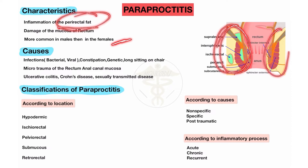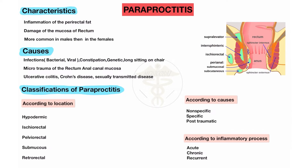Inflammation in the perirectal fat is the most characteristic feature of Paraproctitis. In piles, it occurs in the internal or external part of the rectum — called internal and external hemorrhoid. If you haven't watched that video, it's only 10 minutes. Watch the hemorrhoid video to differentiate between hemorrhoid/piles and Paraproctitis.